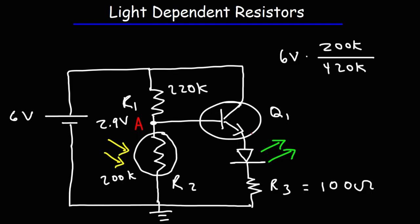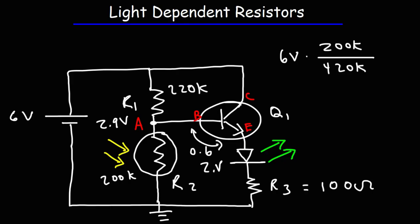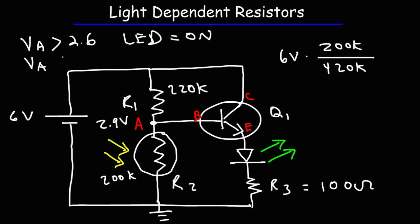In order to turn on the NPN transistor, we need to have a voltage of 0.6 volts between the base and the emitter. The green LED has a voltage drop of 2 volts. So as long as we have a voltage of more than 2.6 volts between ground and point A, the LED will be on. If VA is less than 2.6 volts, the LED will be off. So: if VA is greater than 2.6 volts, the LED is on; if VA is less than 2.6 volts, the LED is off.